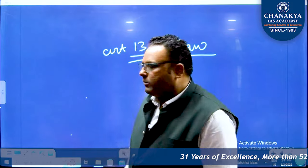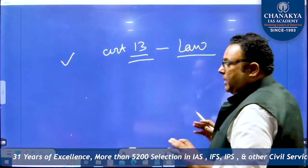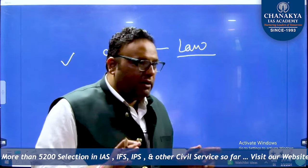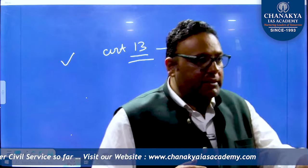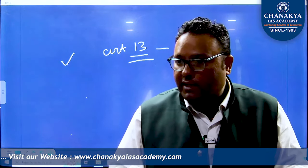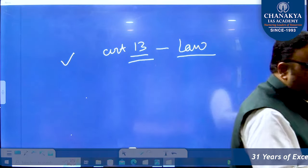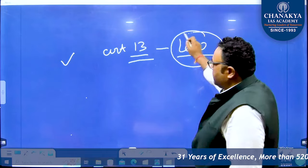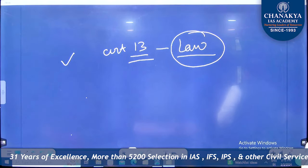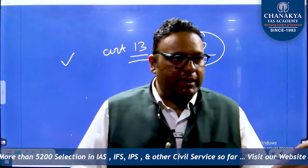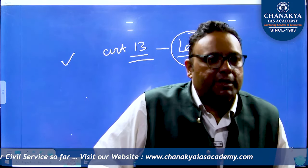Inconsistent ka matlab hota hai ki fundamental right jo baat bol raha hai, aur aapne aisa law bana diya jo usse hatt kar baat bol raha hai. For example, there is a fundamental right in Article 21 of life and liberty. If parliament makes such a law which hampers the fundamental right of life and liberty, then it will be declared unconstitutional and null and void by the judiciary. It is here where we can find the scope of judicial review. The term judicial review cannot be defined anywhere in the constitution, but Article 13 is one of the articles where we find elements of judicial review.